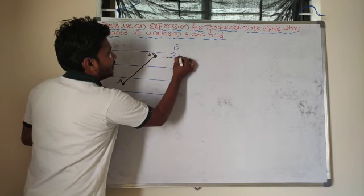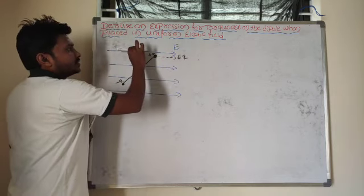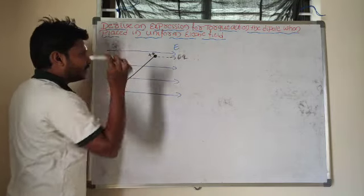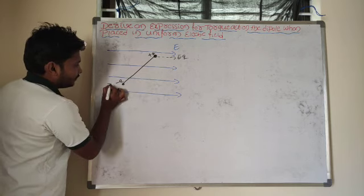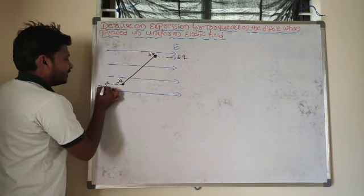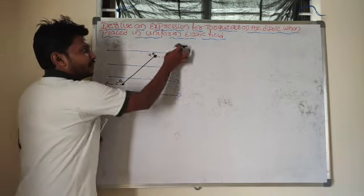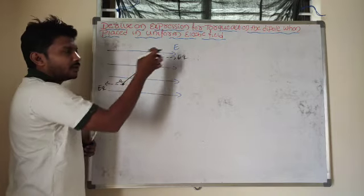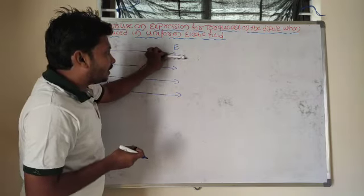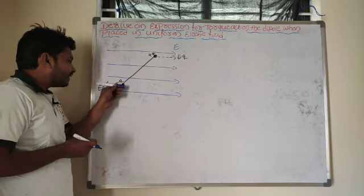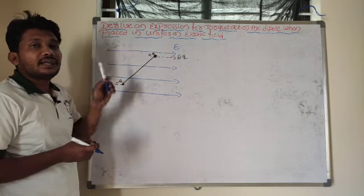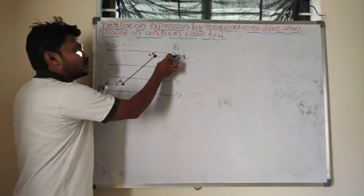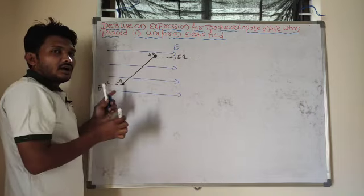One force is acting along the direction of the electric field, and for the negative charge, the force acts opposite to the direction of the electric field. So when the dipole is placed in a uniform electric field, one force acts along the electric field and another force acts opposite to the electric field. Because of these two forces, which are equal in magnitude but opposite in direction, they constitute a torque or couple.